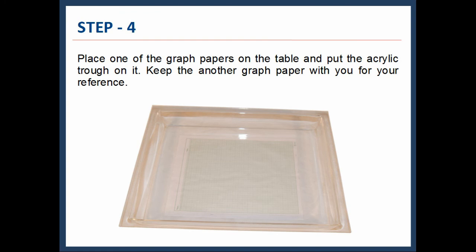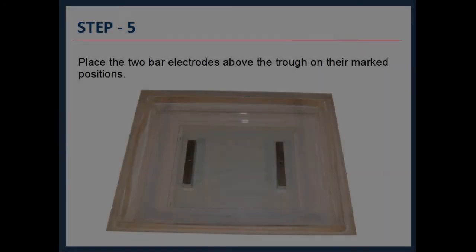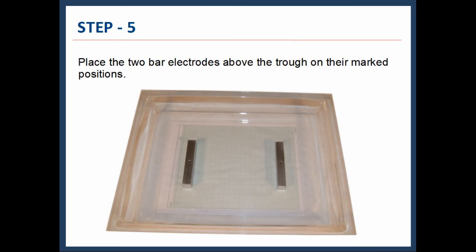Then, place one of the graph papers on the table and put the acrylic trough on it. Keep the other graph paper with you for your reference. After that, place the two bar electrodes above the trough on their marked positions.